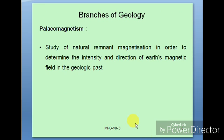Palaeomagnetism is the study of natural remanent magnetization in order to determine the intensity and direction of the earth's magnetic fields in the geological past. It identifies where the magnetic intensity is high in relation to the direction of the earth's field during geologic past.